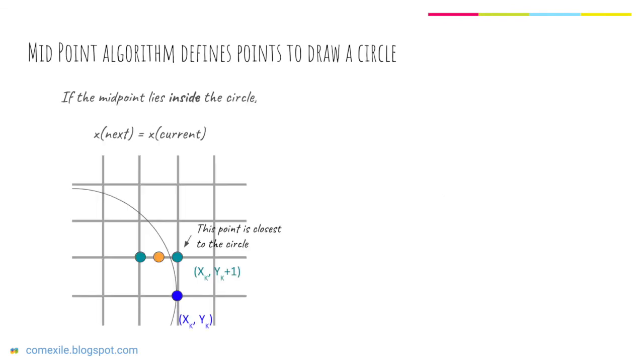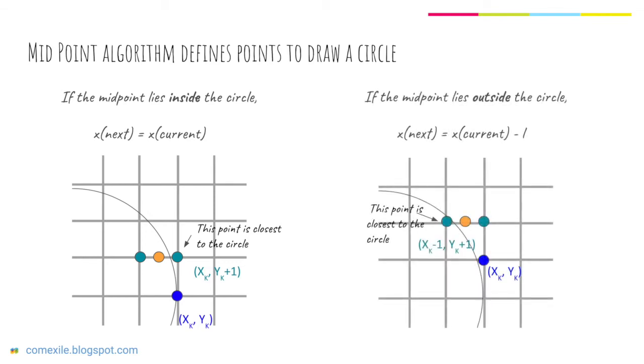If the midpoint lies inside the circle we can see that the point to the right of it is closer to the circle we have to draw. If the midpoint lies outside the circle, we can see that the point to the left of it is much closer to the circle, which means the next x-coordinate will be the current x-coordinate minus one.